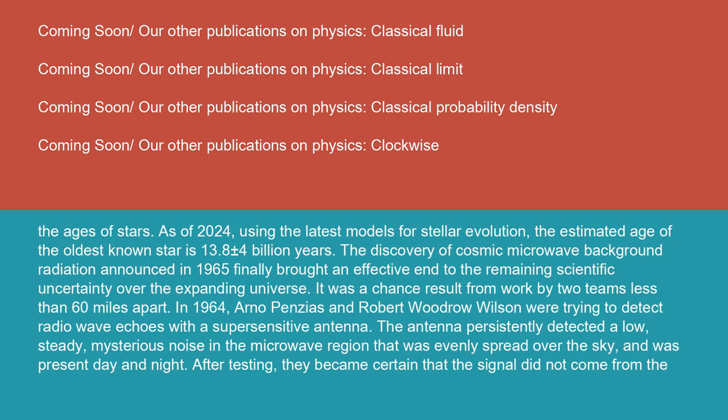As of 2024, using the latest models for stellar evolution, the estimated age of the oldest known star is 13.8 plus or minus 4 billion years.